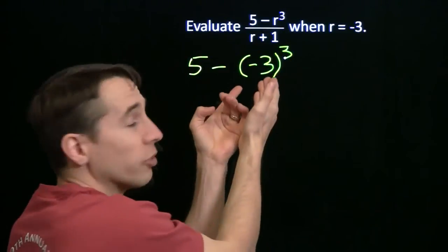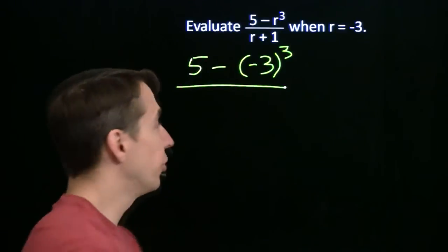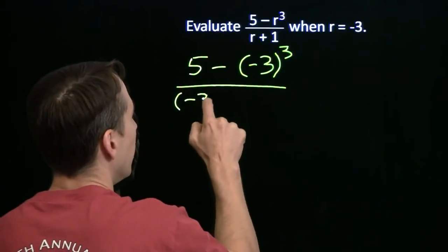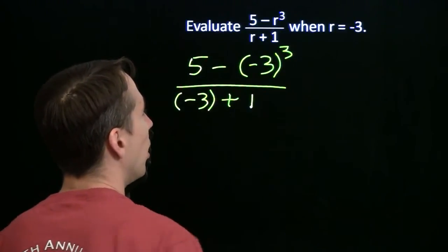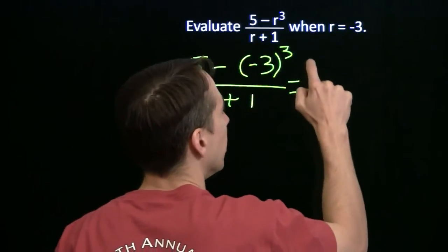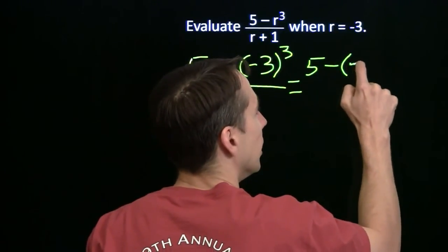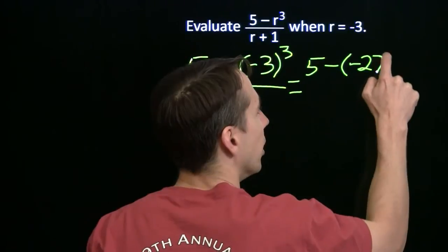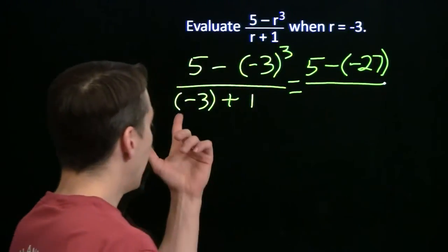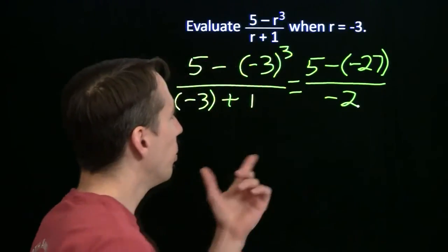Again, parentheses, they're your friend. We have negative 3 plus 1. So now we can work this out up in the numerator here. The cube of negative 3 is negative 27. And again, I'm keeping my parentheses in there. Now here I have minus 3 plus 1, that's just minus 2.